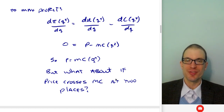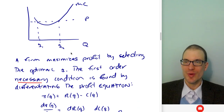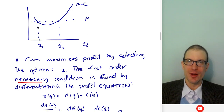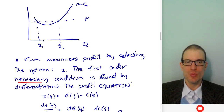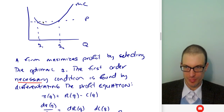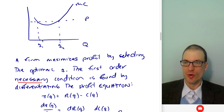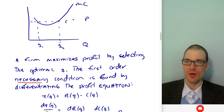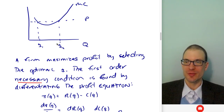What if price crosses marginal cost at two places? If marginal cost is U-shaped, there are two quantities where price equals marginal cost. The principles of micro argument: if we were producing q1, would we want to produce a little bit more? Yes, because price (marginal revenue) is higher than marginal cost between q1 and q2, so we'd want to produce one more unit all the way up to q2. At q2, price equals marginal cost. Beyond q2, marginal cost exceeds marginal revenue, so we stop at q2 to maximize profit.